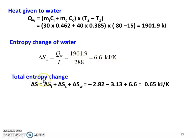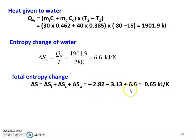The total entropy change: delta S = entropy change of the iron block + entropy change of the copper block + entropy change of the water = (−2.82) + (−3.13) + 6.6 = 0.65 kJ per Kelvin. So, the total entropy change is 0.65 kJ per Kelvin. That is the answer to the problem.